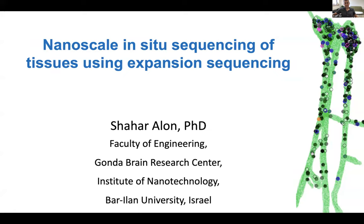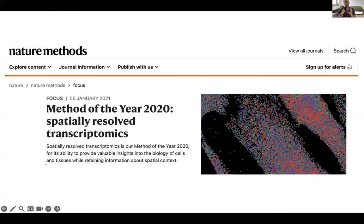Thank you for this opportunity and this very unique symposium. I'm Shahar from the Faculty of Engineering at Bar Ilan University in Israel. I want to talk about nanoscale in-situ sequencing of tissues. This relates to a new emerging field — spatially resolved transcriptomics — a family of technologies making a huge difference in genomics, turning over genomics as we know it, because for the first time it allows us to map the locations of genes inside tissues.